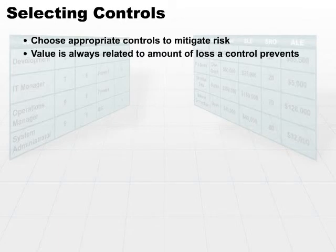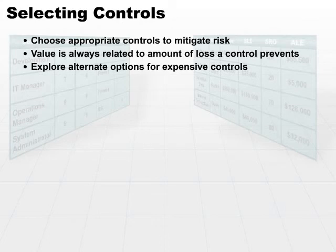The value is always related to the amount of loss a control prevents. Keep in mind, the value is always in terms of what the amount of loss the control prevents, but you have to take into account how much the control itself costs. Always explore alternate options for expensive controls. When you're spending almost as much as the projected loss to control that loss, see if there's another way to do it.